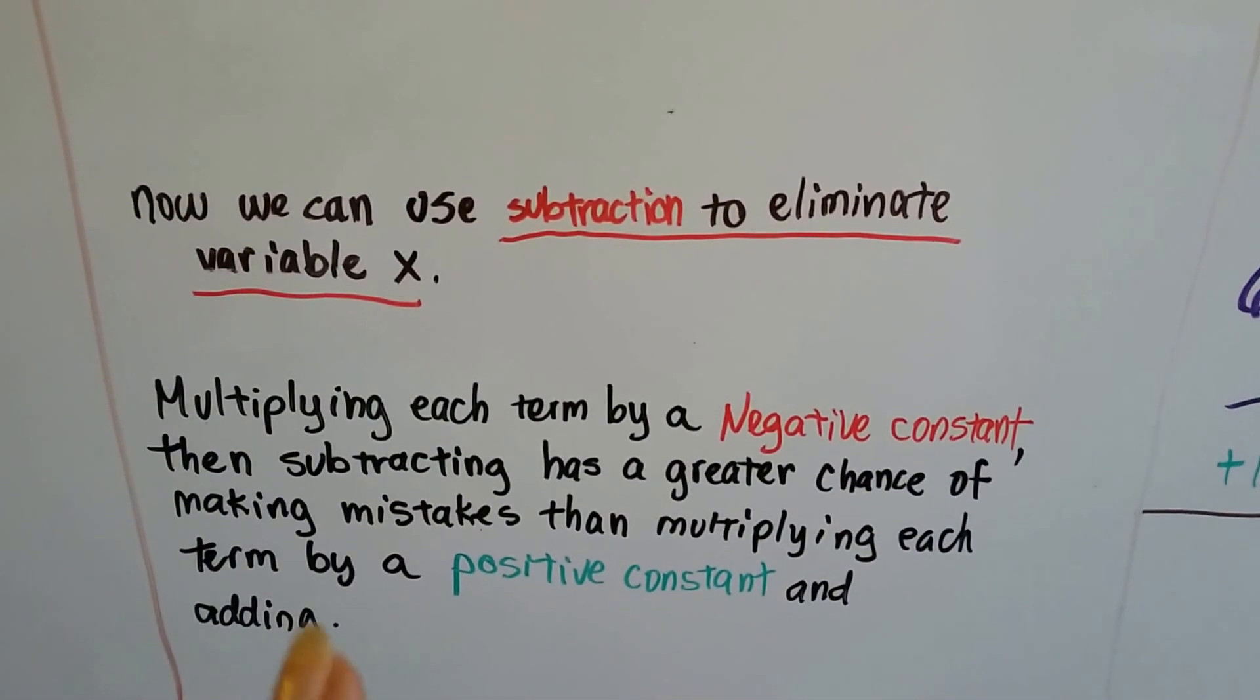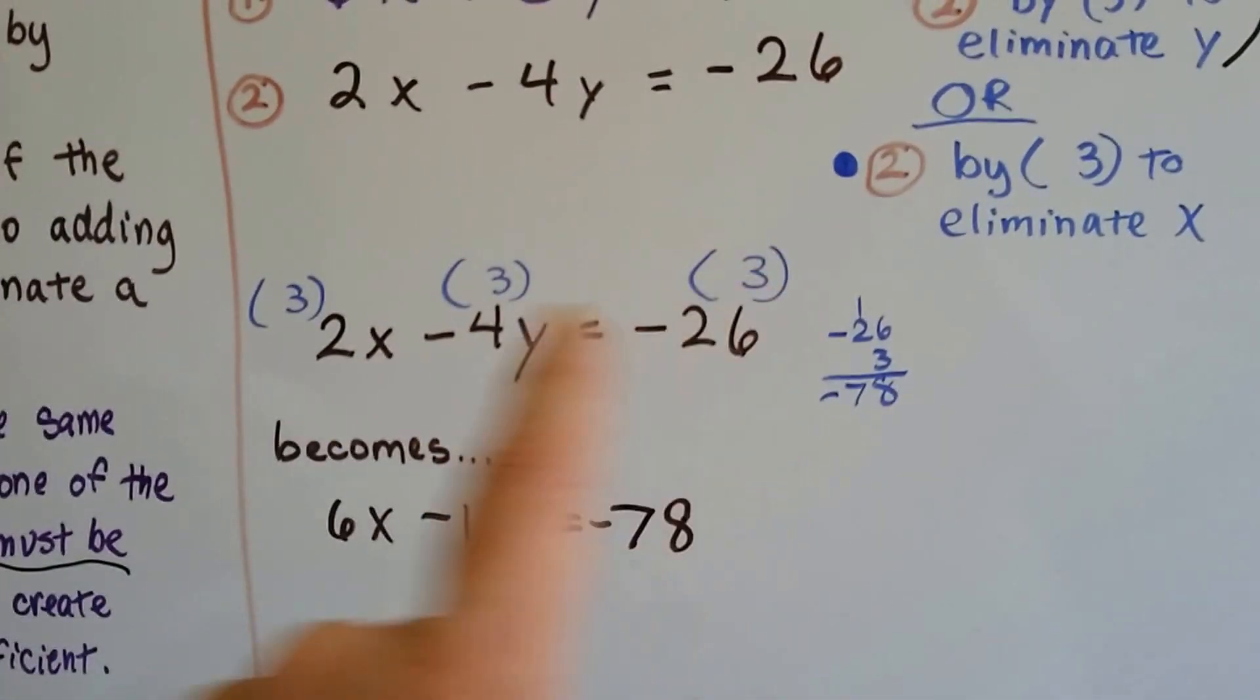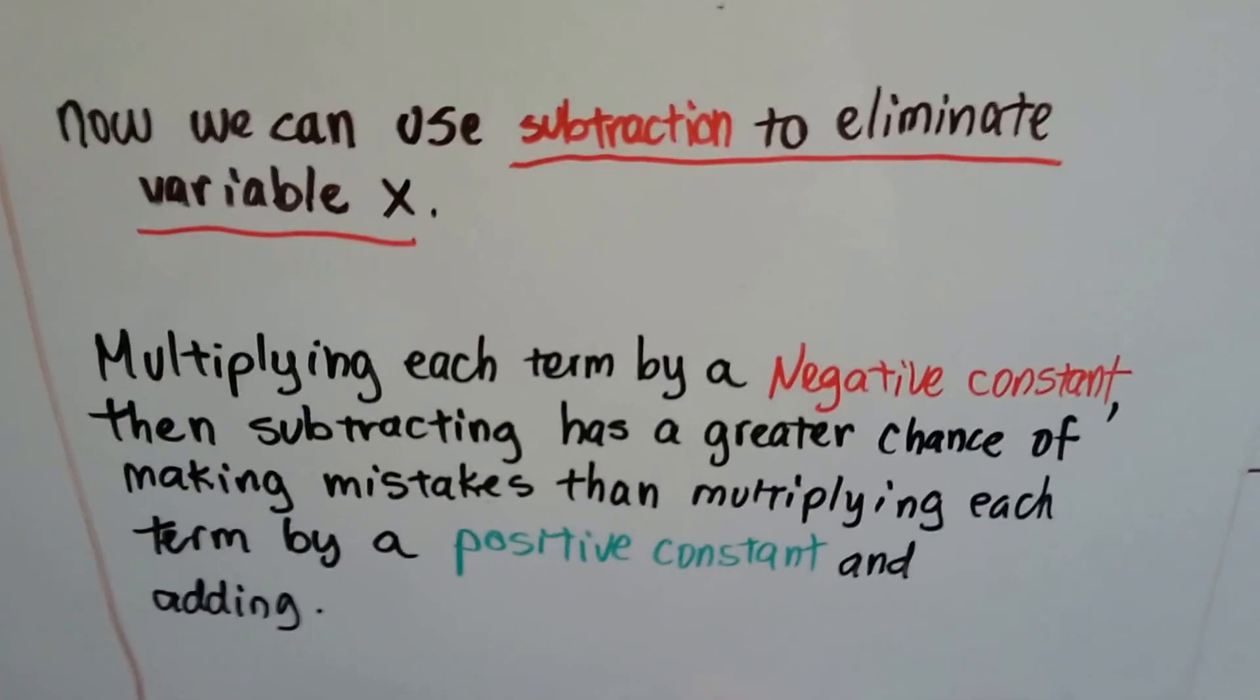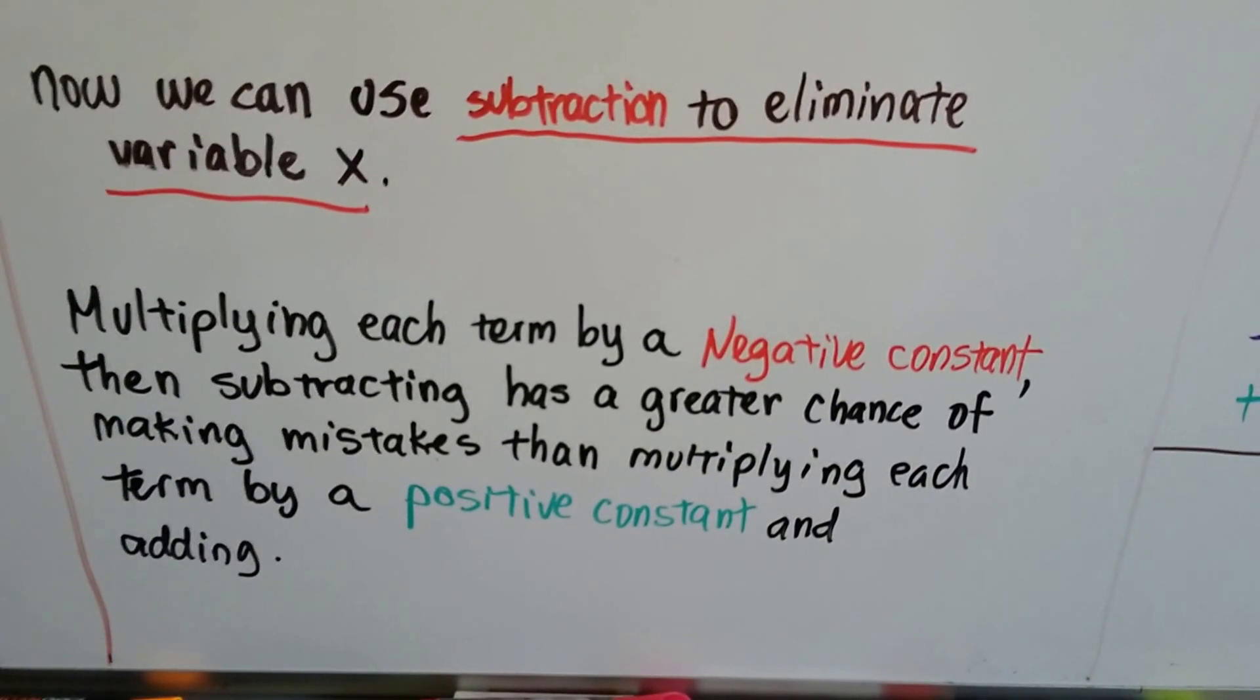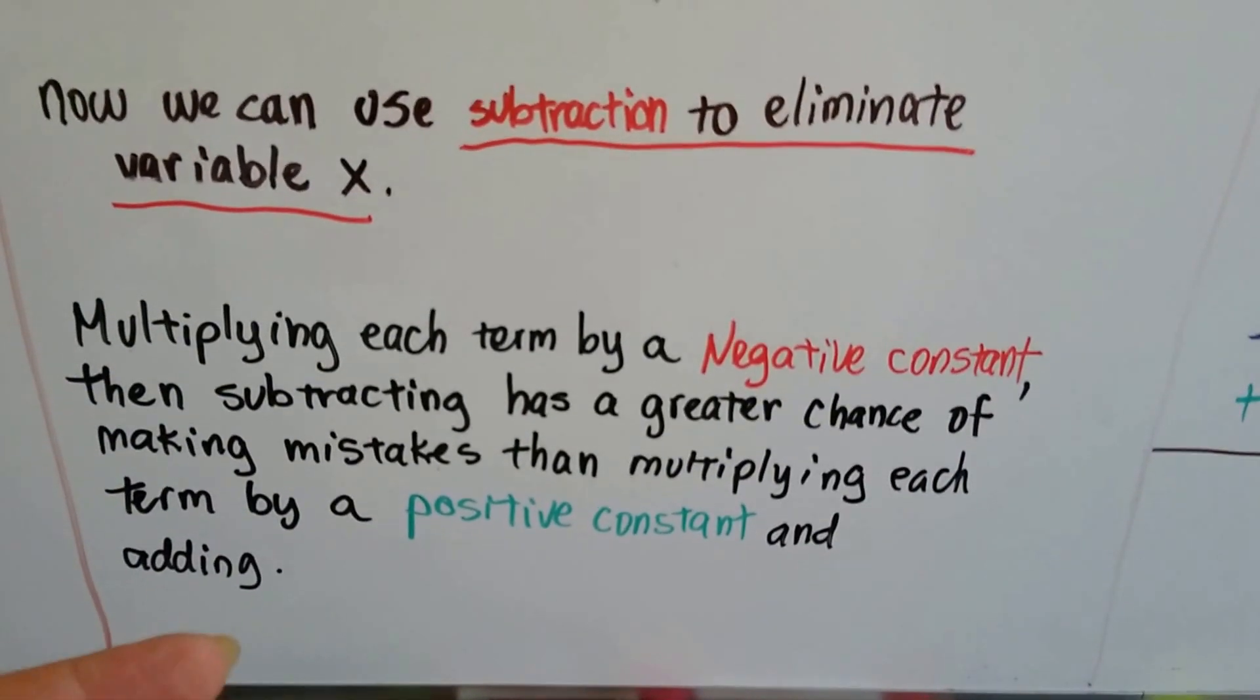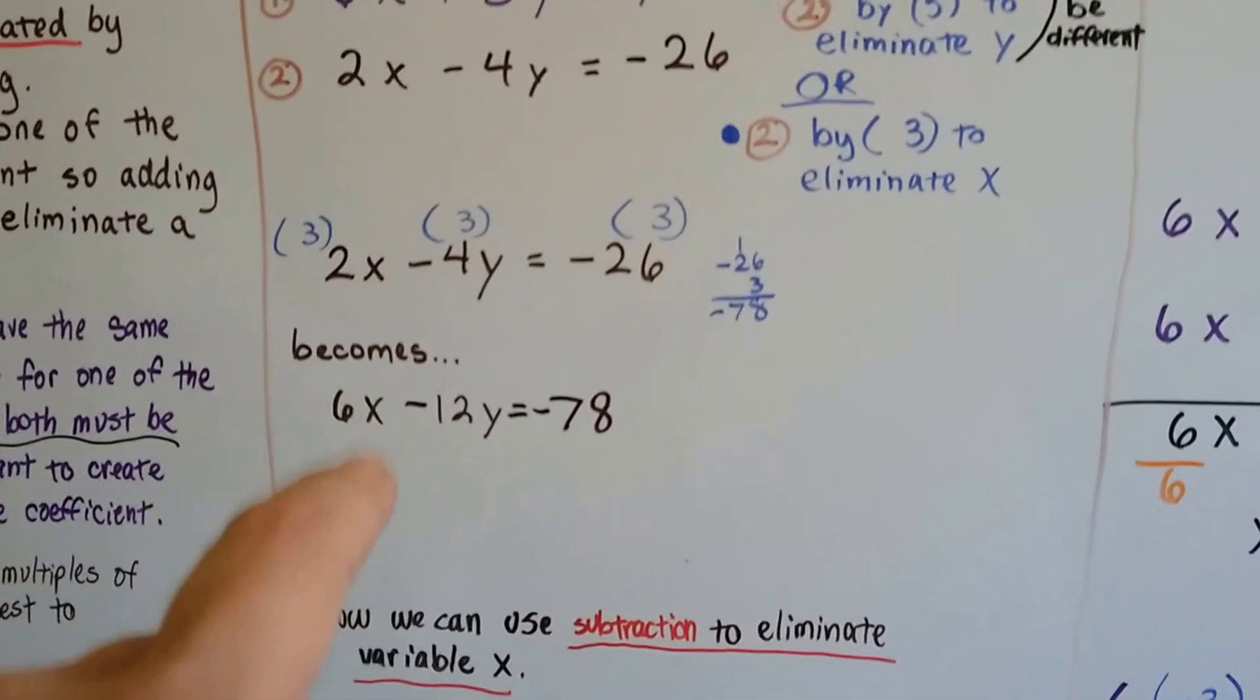Now, multiplying each term by a negative constant, because we could have multiplied each one of these by a negative 3, so we'd have a negative 6 and a positive 6 here. Well, if we had done that and multiplied each term by a negative constant, then subtracting, that is a greater chance of making mistakes than multiplying each term by a positive constant and adding. That's why I chose to just use 3 instead of a negative 3.